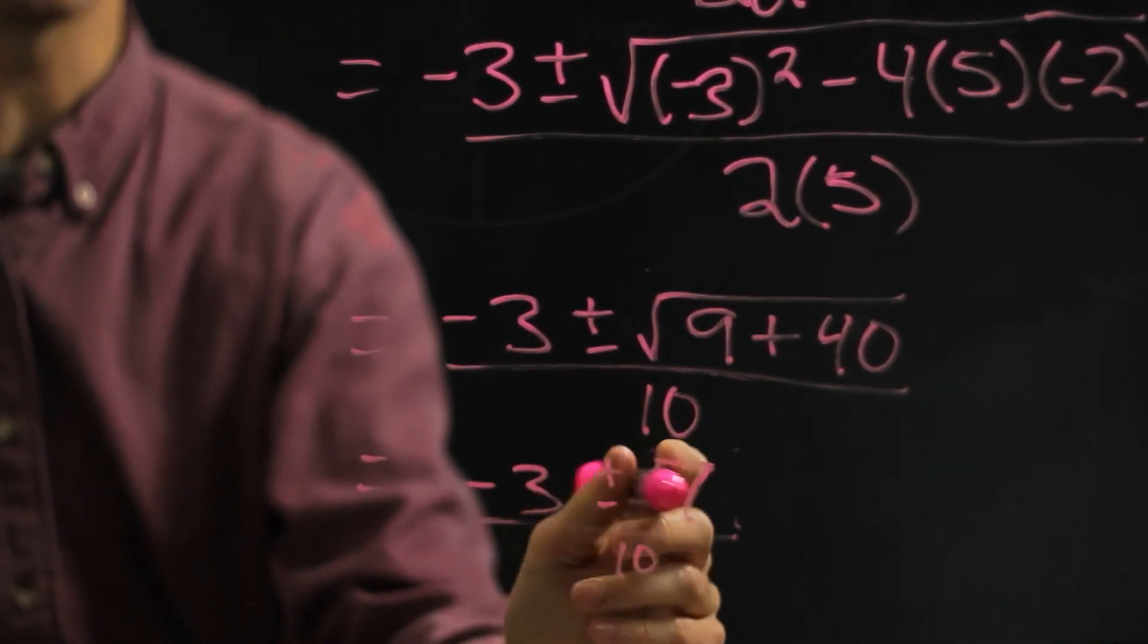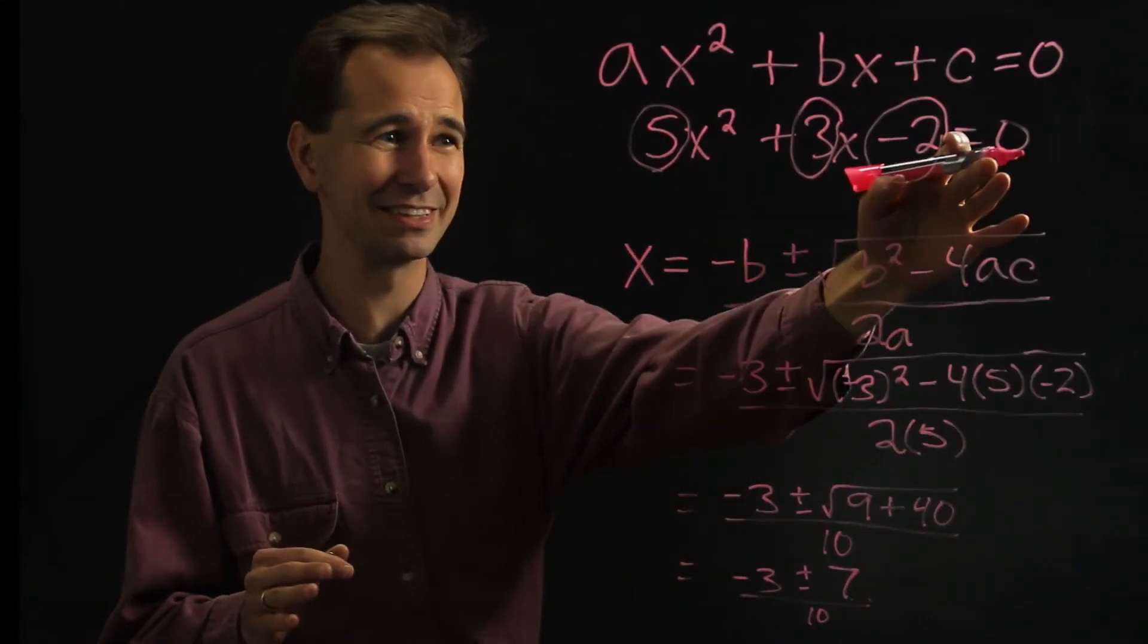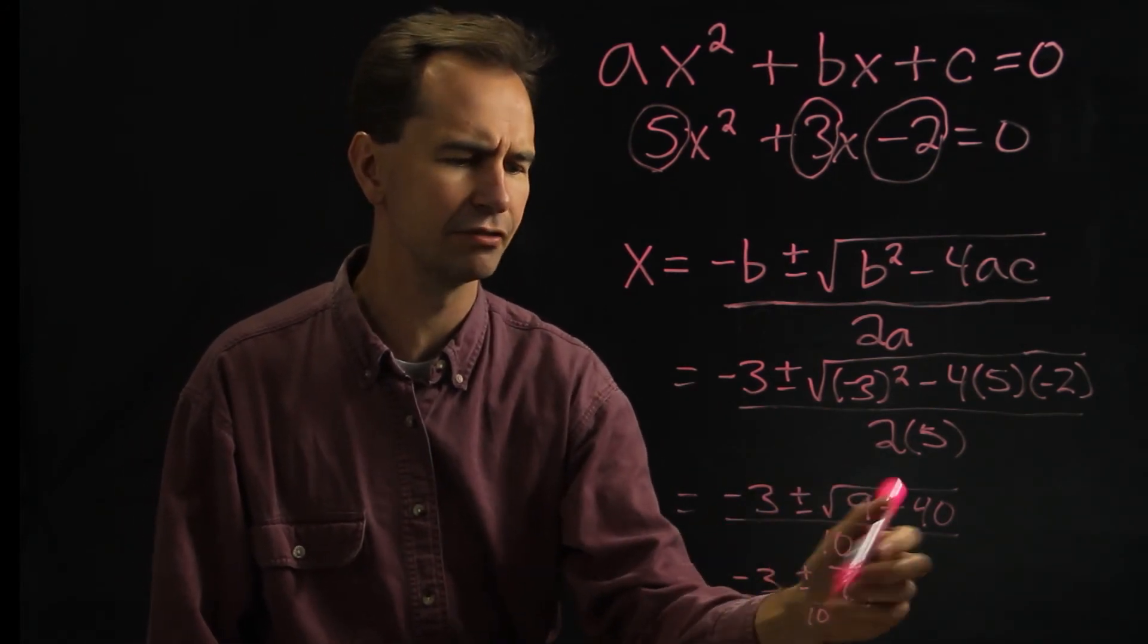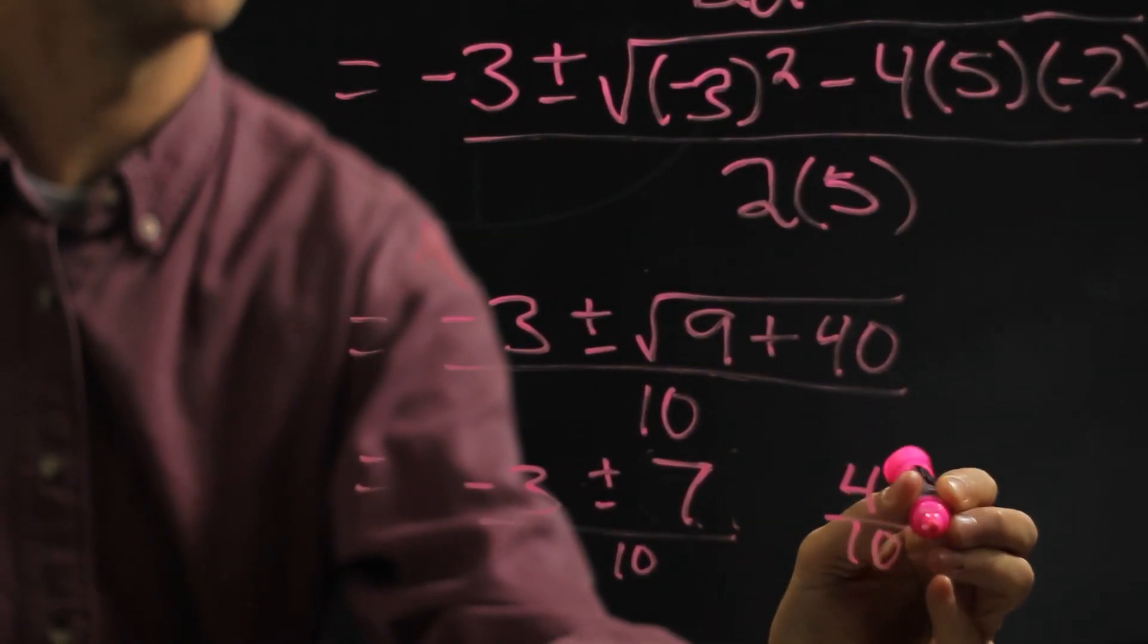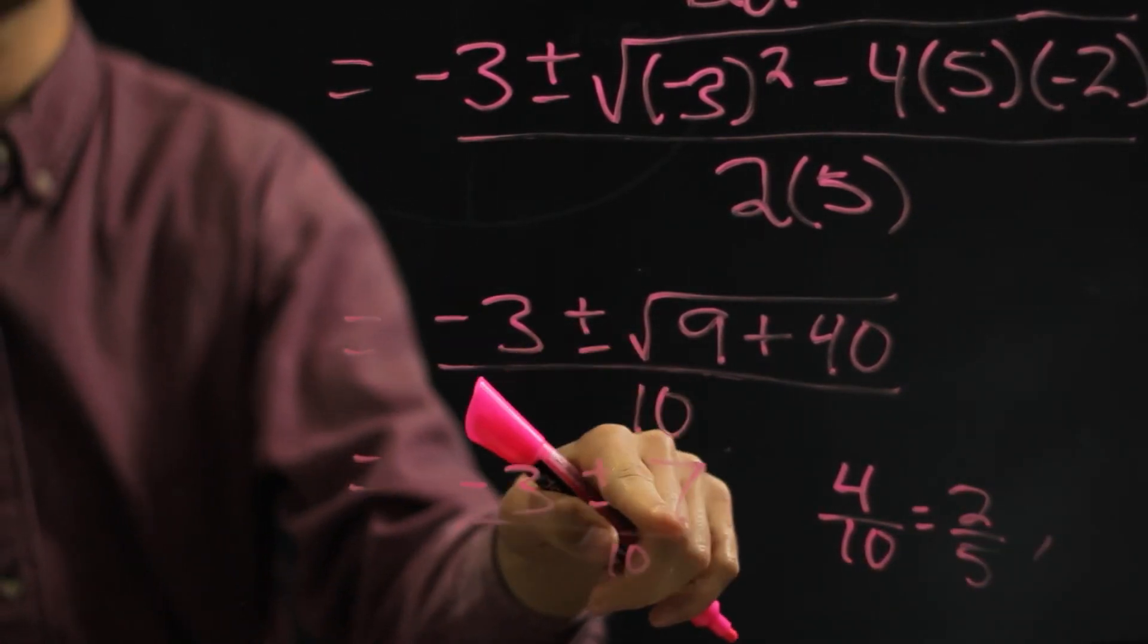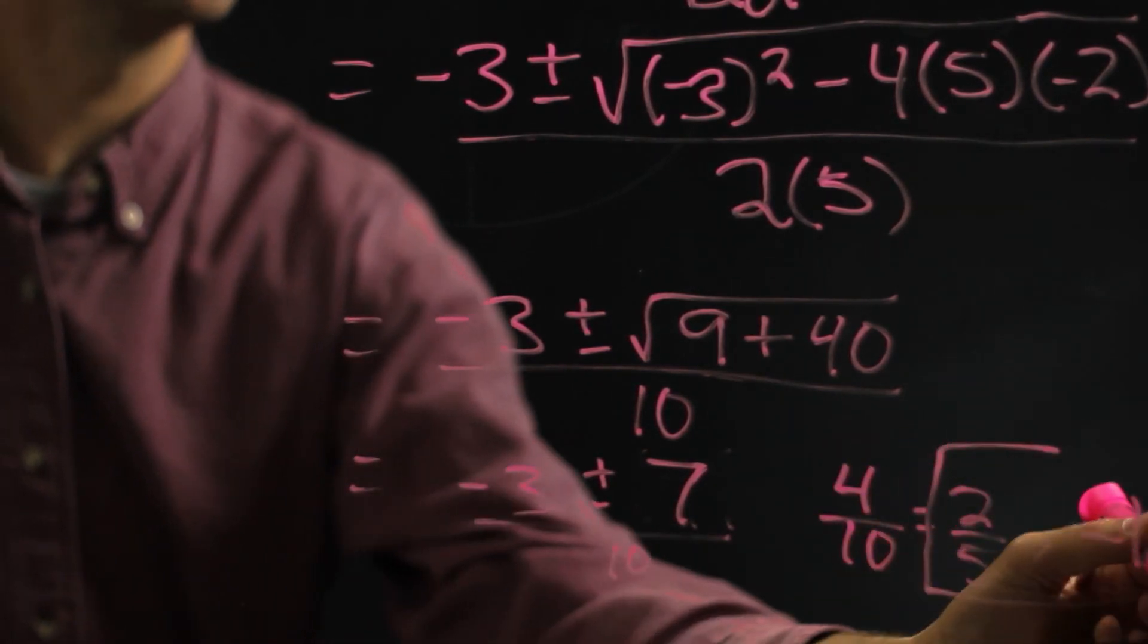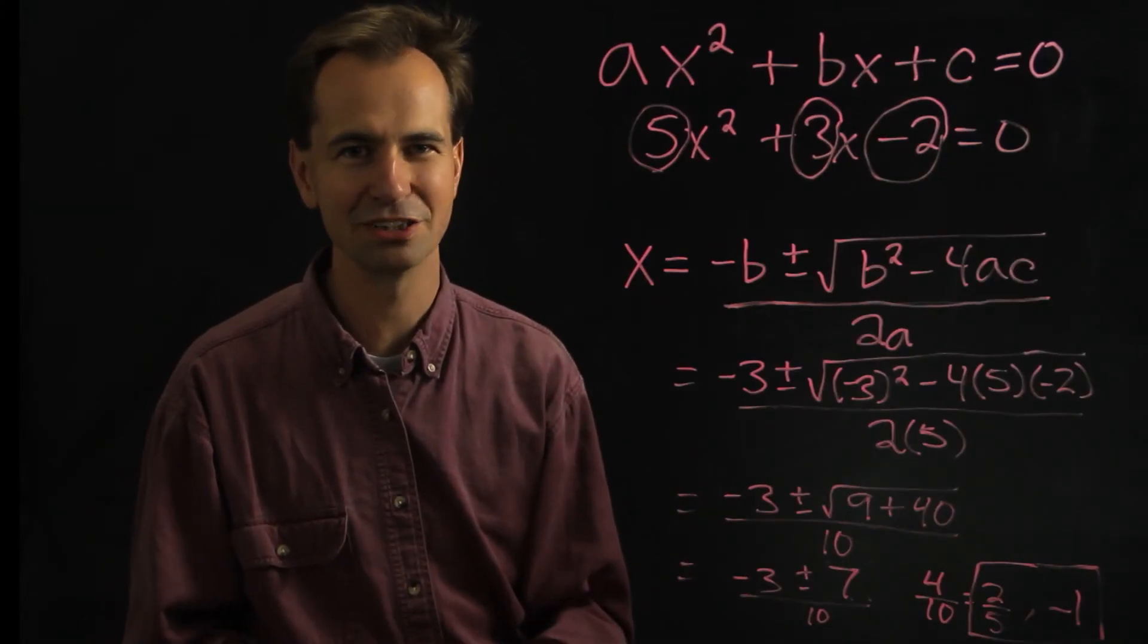And you notice that plus and minus, that means that there's really two answers. Two different x values could make this equal 0. And so we actually have two answers, and let's write them both. So one of them would be negative 3, plus 7, so that would be 4, divided by 10, or in other words, 2 fifths. And then the other one would be negative 3, minus 7, which would be negative 10, divided by 10. So that would be negative 1. So there you have the two values that x could equal in order to make this quadratic equation equal 0.